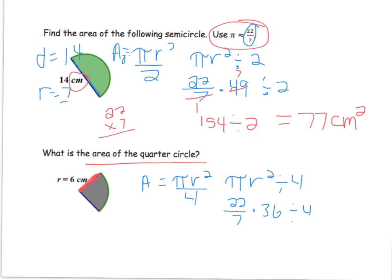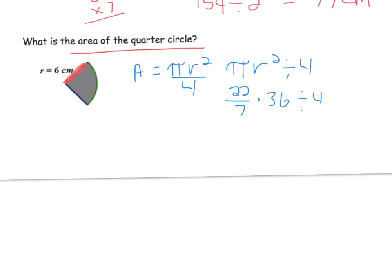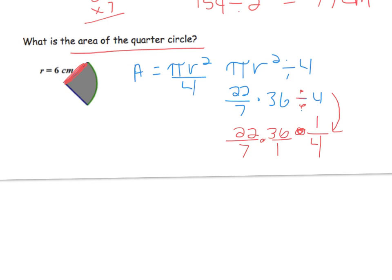Alright, here's what I have so far for this problem. I had my original area equals pi r squared, and then because it is a quarter circle I have it divided by 4, and then I rewrote it and plugged in what I knew. Here I see 7 doesn't go into 36, so you could do 22 times 36 and then divide it by 7 and then divide by 4. However, I'm going to change it — I know that dividing by a number is the same thing as multiplying by its multiplicative inverse. So I changed this to its reciprocal. When we're dividing, we can multiply by its multiplicative inverse, and because it's all multiplying I can use the commutative property.